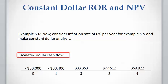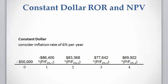Now let's consider an inflation rate of 6% per year and use this escalated dollar cash flow to calculate the constant dollar cash flow — then calculate the rate of return and NPV for the constant dollar cash flow. To calculate the constant dollar cash flow, we discount each payment by the 6% inflation rate over its respective discounting period. For example, the escalated dollar of $86,400 at year one is discounted at 6% for one period; at year two, the discounting period is two, and so on.